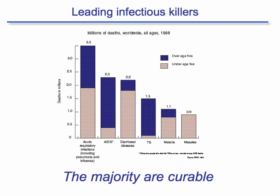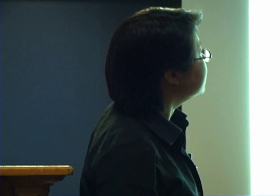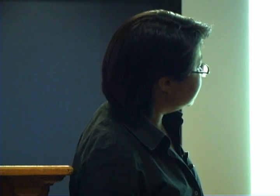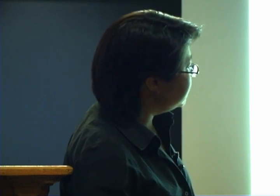Let's look at what the major infectious disease killers are. The majority are acute respiratory infections including pneumonia and influenza — incredibly common things that we forget cause so many deaths. There's HIV, diarrheal diseases, TB, malaria, and measles. We know the challenges of HIV; measles we don't have a lot of good options for — but the majority are actually curable. So why is infectious disease still such a problem?